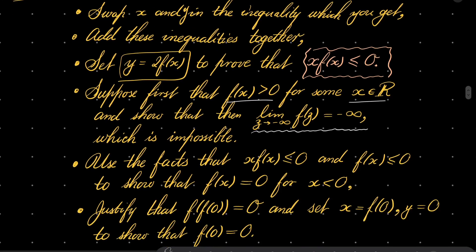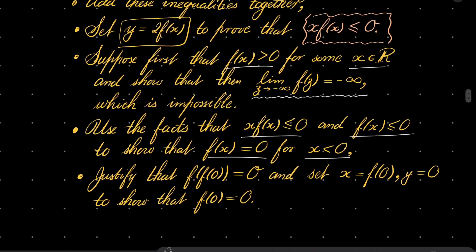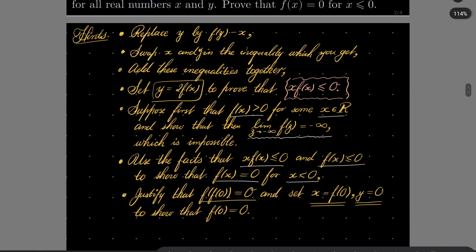After showing that, use this crucial inequality boxed in orange, together with the inequality from the previous part, to show that our function must equal zero for negative arguments. What's left is to show that f of zero is also zero. To do that, justify that f of f of zero is zero, then set x to be f of zero and y to be zero in the original inequality. That should be enough.